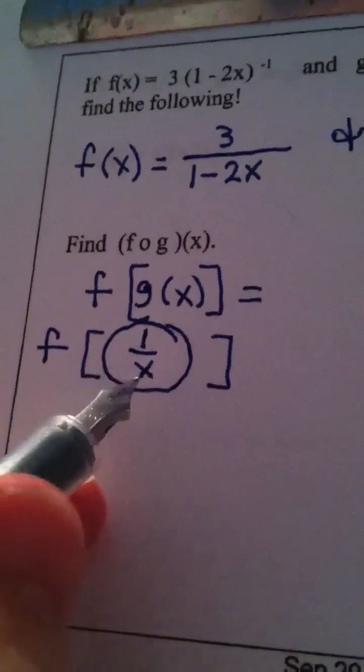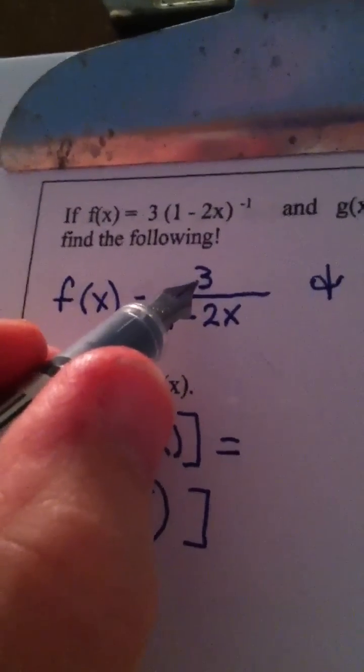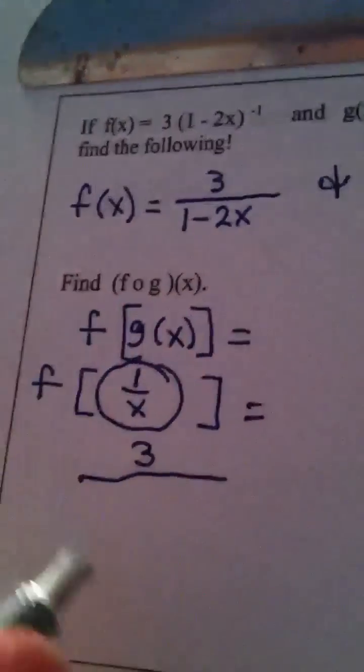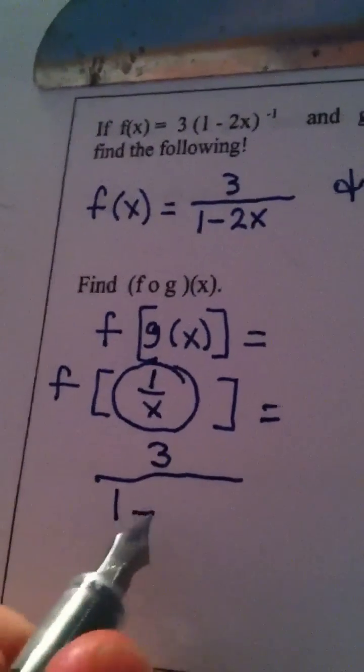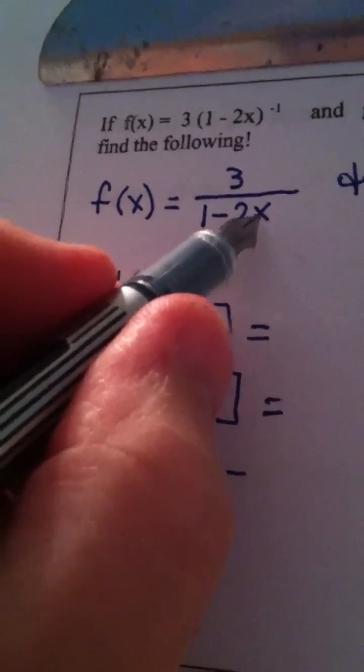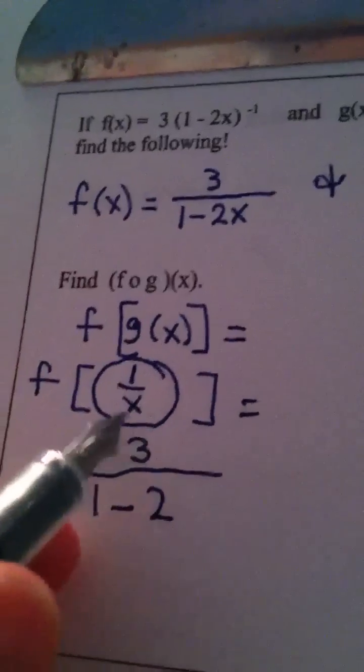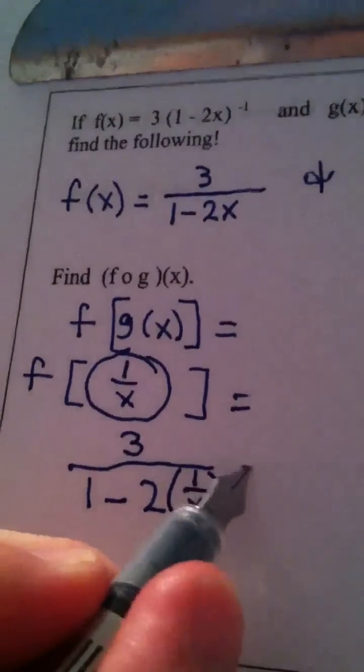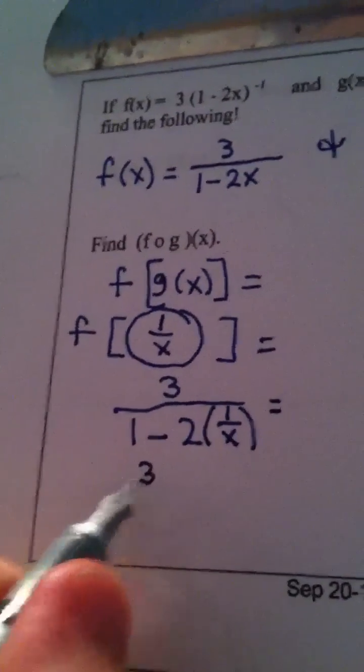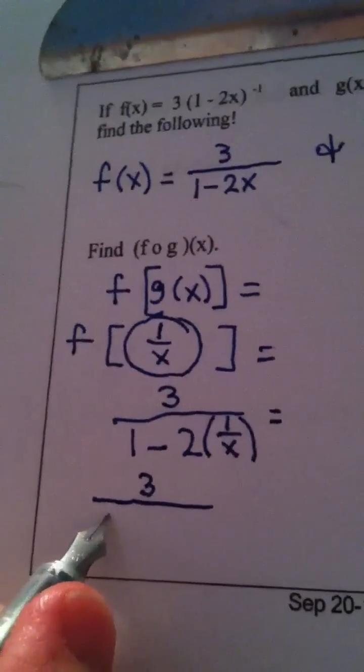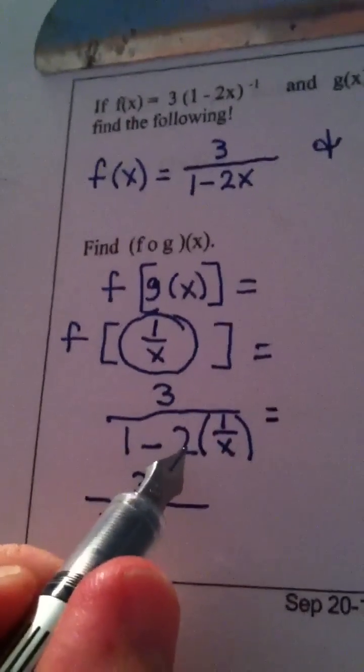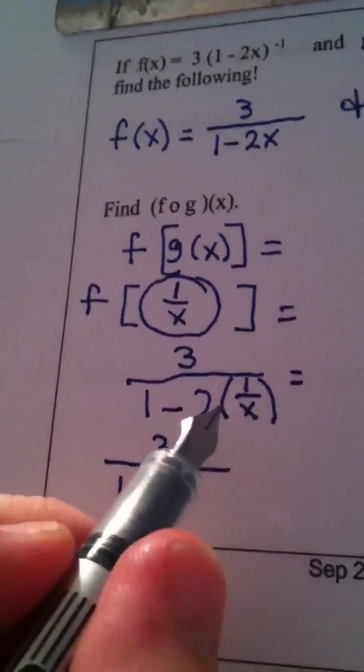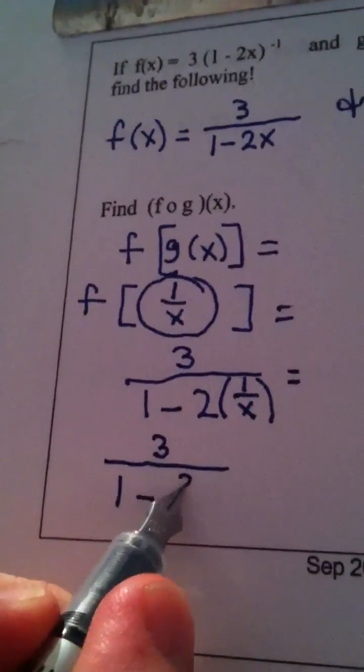1 over x is getting fed to function f. Well, here's what function f does. It puts 3 on the top. It puts a 1 on the bottom. It puts a minus on the bottom, a 2 on the bottom. And then this x, whatever this x is, is a dummy placeholder for input. And the input is 1 over x. So we have 3 on the top in the numerator, and 1 minus 2 times 1 over x. Think of this as 2 over 1 times 1 over x. Nothing cross cancels, so we just have 2 over x.